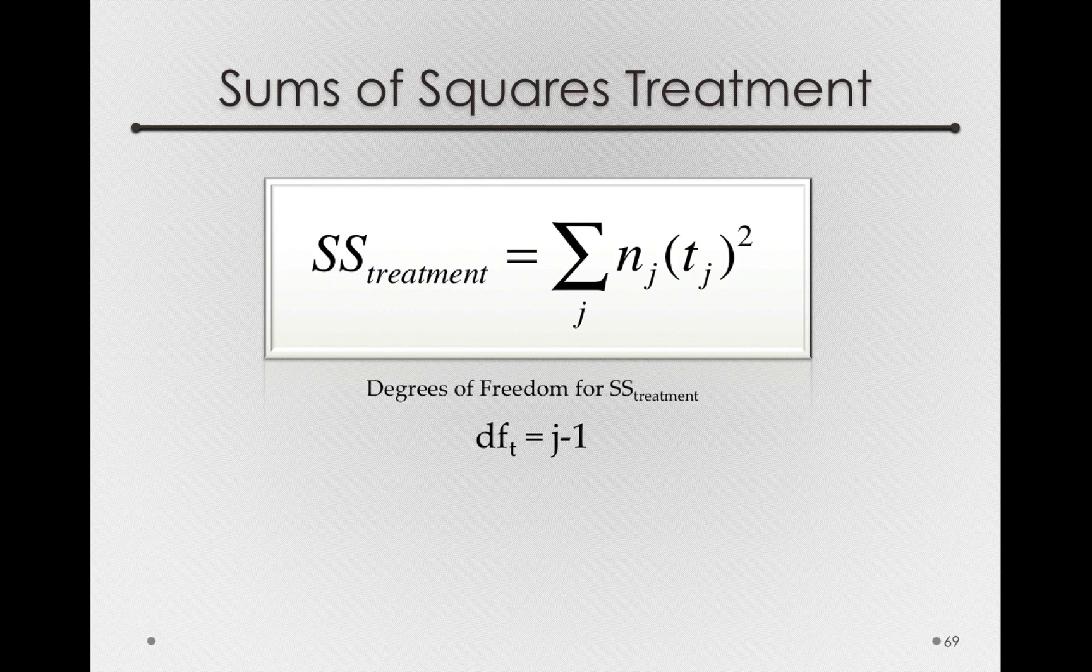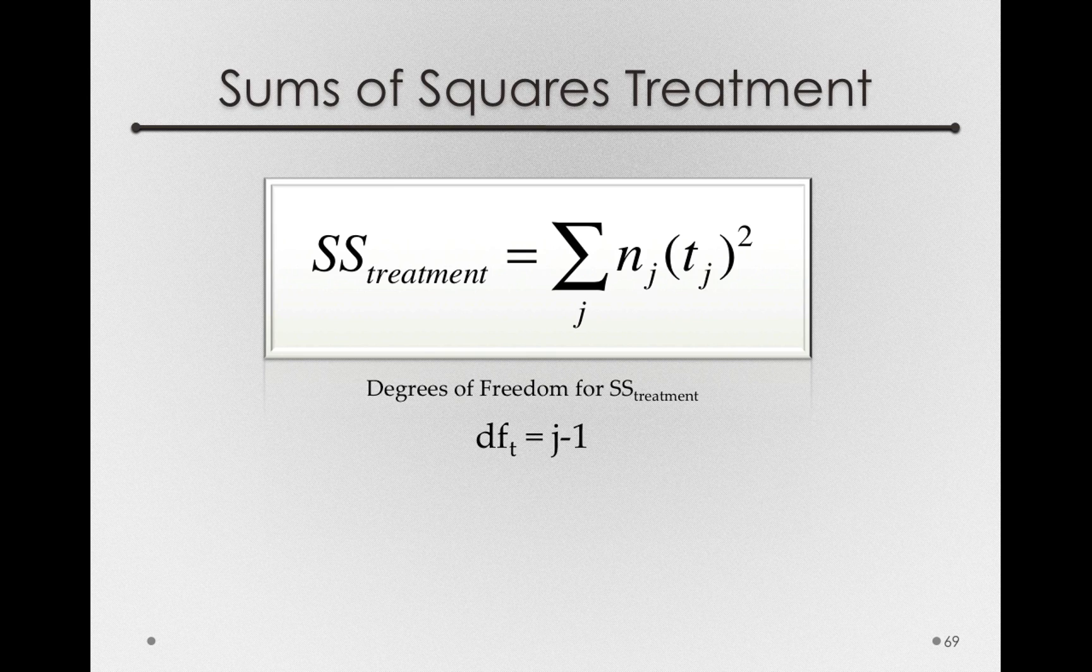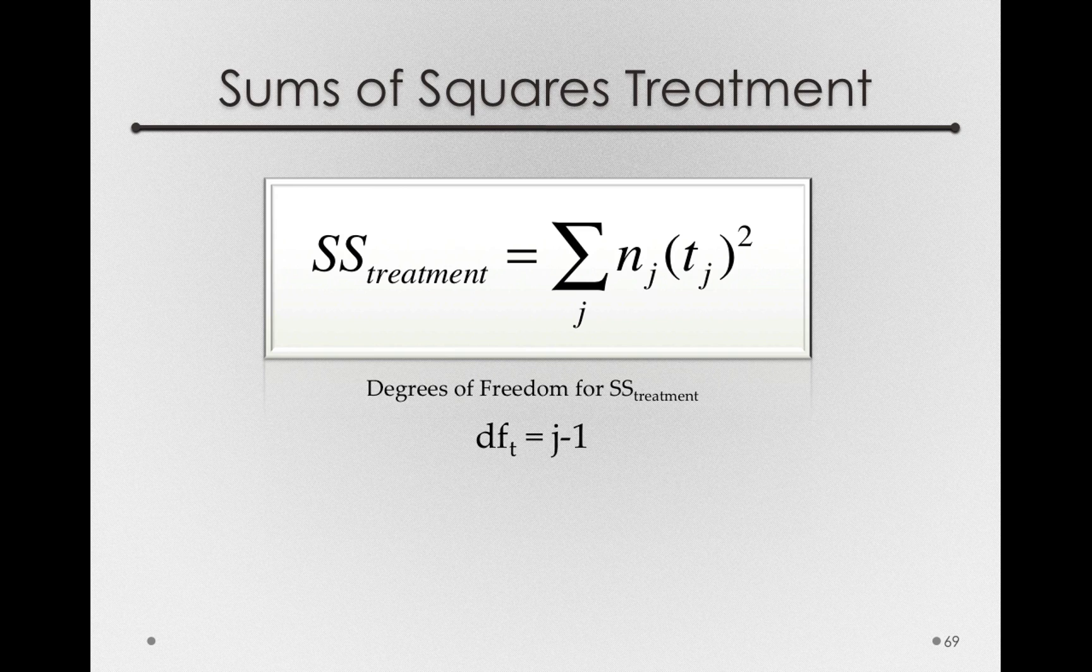Stepping forward, we can see that the sums of squares for treatment are simply calculated on the basis of the t's, the treatment offsets we have in our sample. And the degrees of freedom for these sums of squares for treatment are simply j minus one, where j is the number of groups we have. Let's see why this is the case.